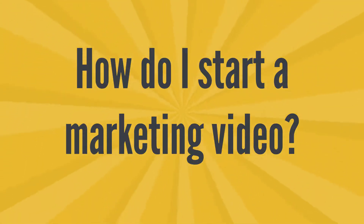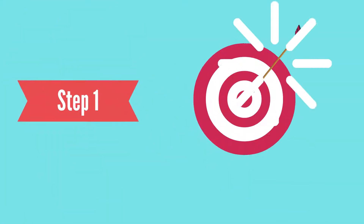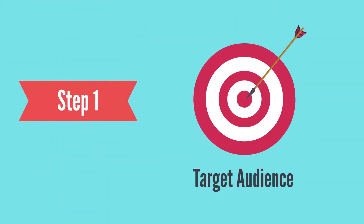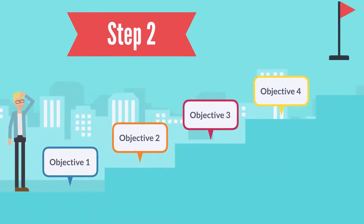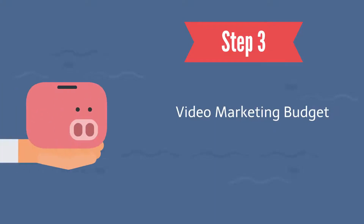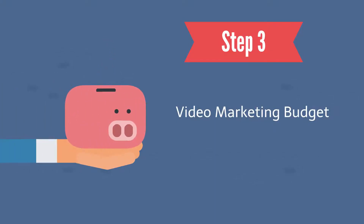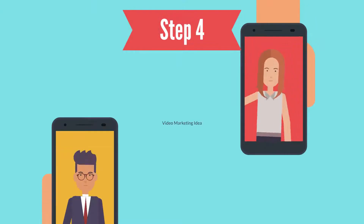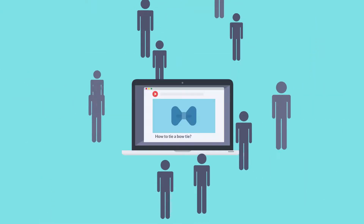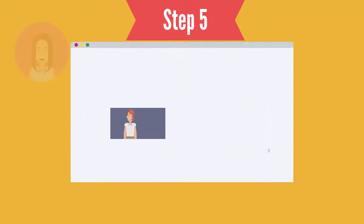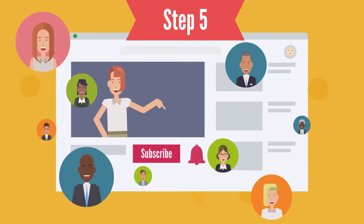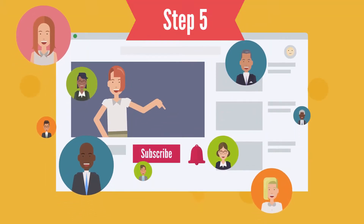How do I start a marketing video? Step one: choose your target audience. Step two: identify what you're trying to achieve. Step three: plan your video marketing budget. Step four: choose a type of video and come up with a video marketing idea. Step five: decide where you will publish your video.